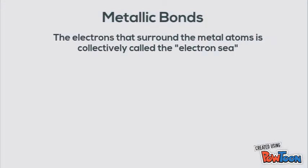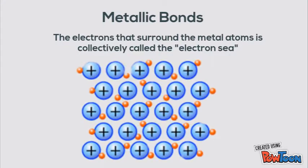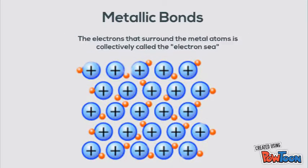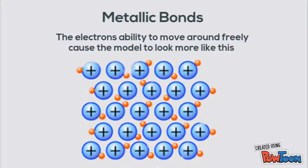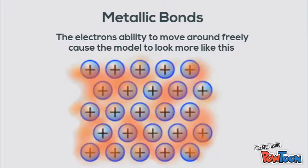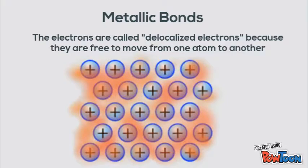Electrons that surround the metal atom are collectively called the electron sea. You can see here where they're just kind of randomly dispersed between the metal cations. The electrons' ability to move freely causes the model to look more like a sea where they're just moving back and forth — it's more of a haze of electrons.